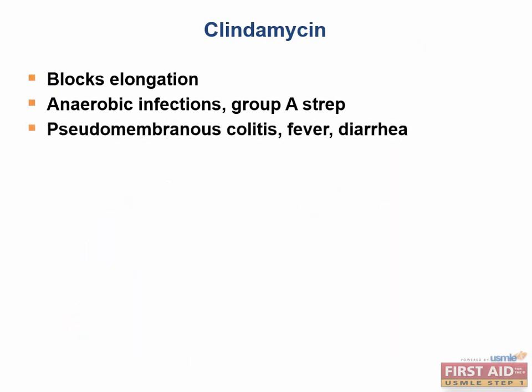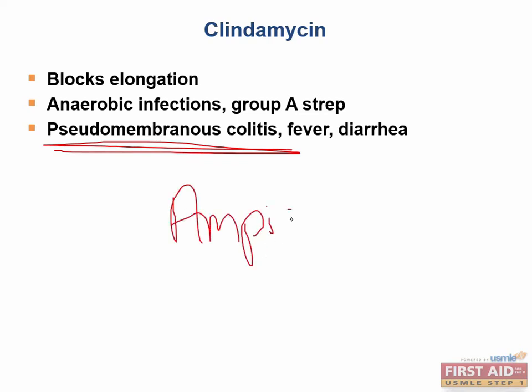Clindamycin is associated with an increased incidence of pseudomembranous colitis as it results in C. difficile overgrowth. All antibiotics predispose patients to C. difficile colitis, but clindamycin has been more commonly associated than other drugs. Ampicillin is another drug commonly associated with pseudomembranous colitis.